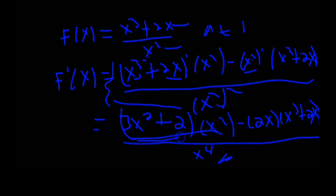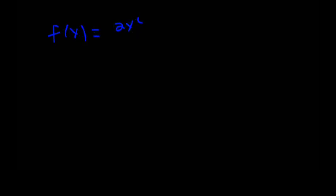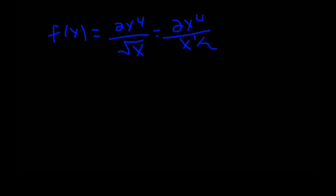f(x) is equal to 2x to the power of 4 over the radical of x. We can simplify it as 2x to the power of 4 over x to the 1 over 2. So the derivative of x is equal to x, and we simplify.